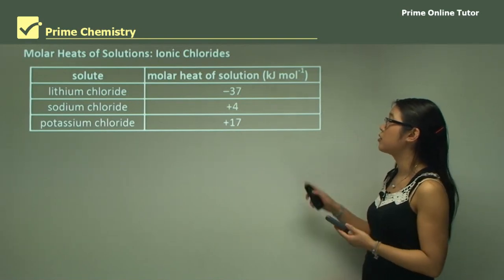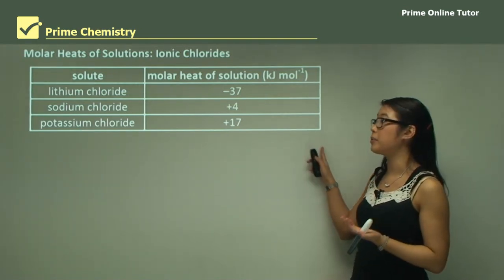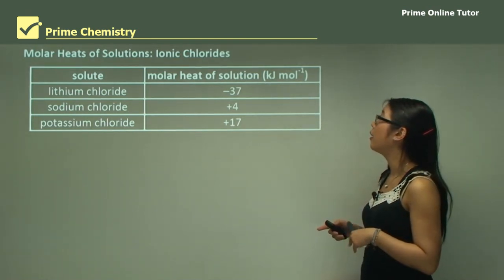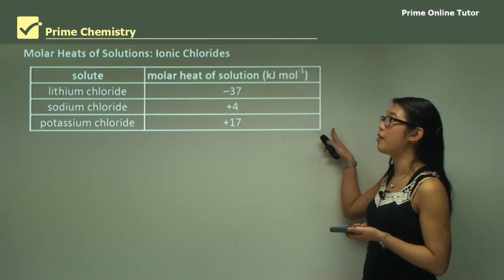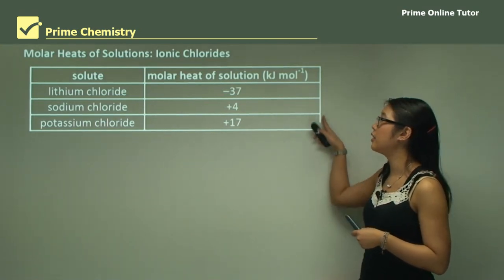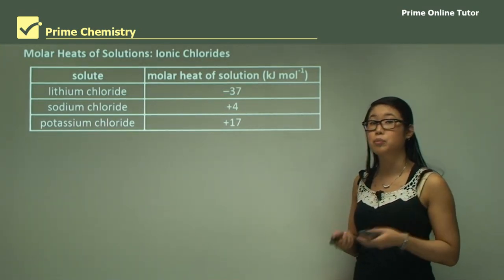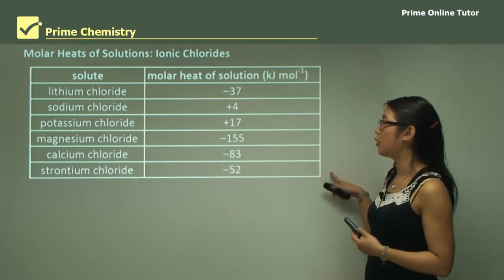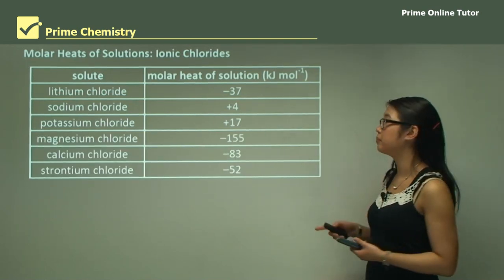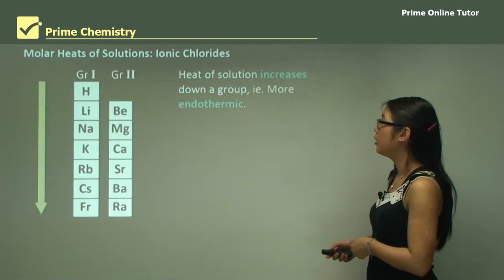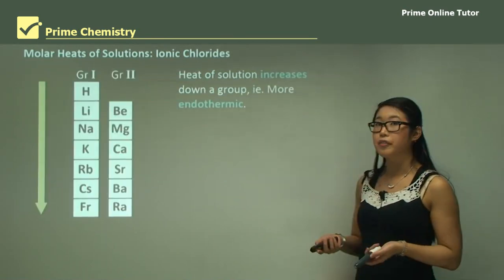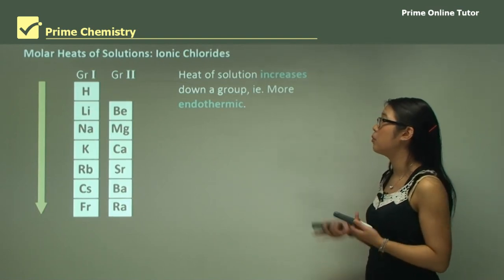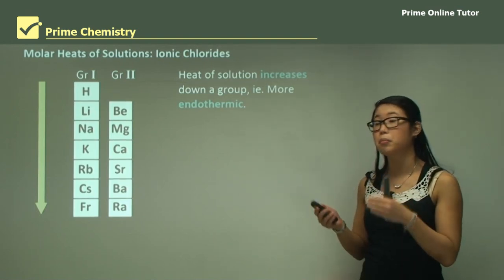The molar heat of solution for lithium, sodium, and potassium chloride — we can see it's exothermic because a negative value means exothermic and a positive value means endothermic. So when we dissolve potassium chloride, the solution will feel cold. The general trend is that the heat of solution increases down a group, meaning it becomes more endothermic and more positive.